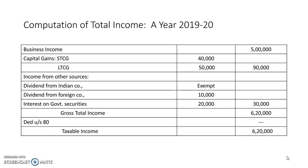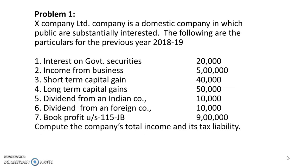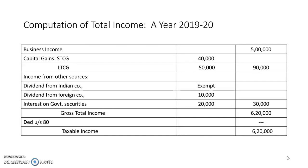Under business income, we take 5 lakh directly. Under capital gains, short-term capital gain is 40,000 and long-term capital gain is 50,000, totalling 90,000. Under income from other sources, dividend from Indian company is fully exempt under Section 10, dividend from foreign company is 10,000, and interest on government securities is 20,000. Adding all incomes gives a gross total income of 6 lakh 20,000.